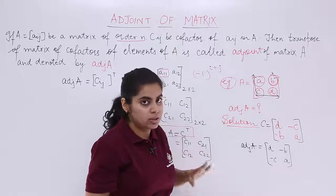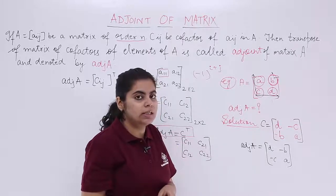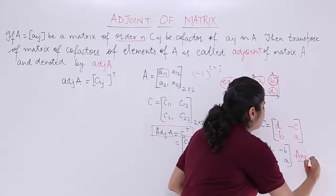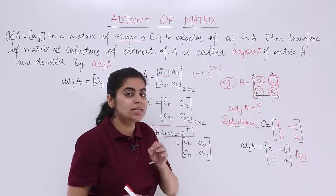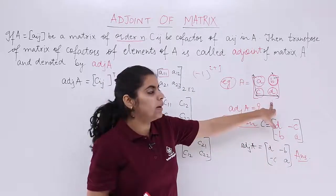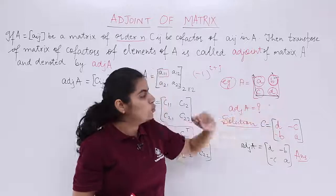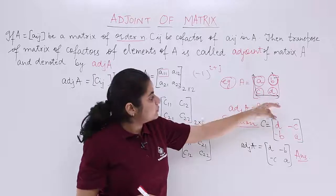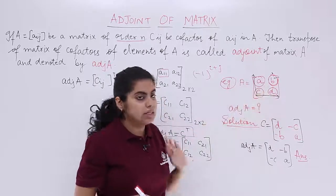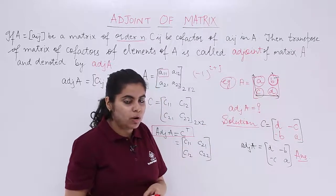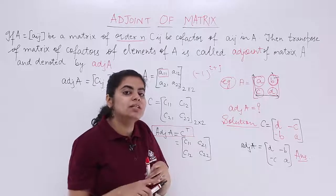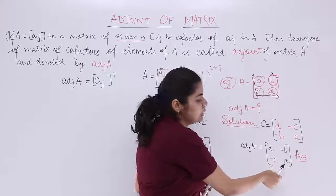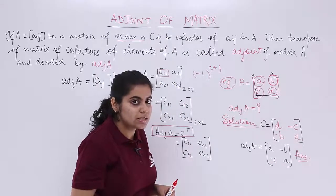Now there is also a short trick. Either you calculate it fully and write the answer, but the short trick must be applied only for a 2 by 2 matrix. For a 2 by 2 matrix, you can directly find the adjoint. You have elements A, B, C, D. The answer: first, interchange the diagonal elements A and D.